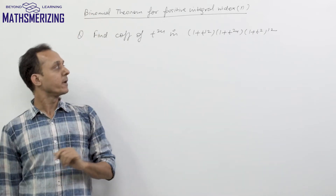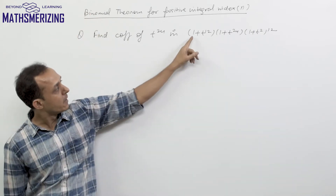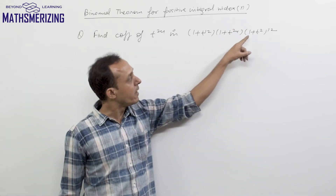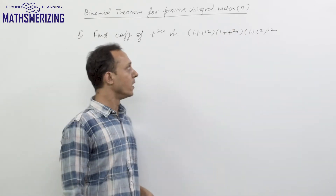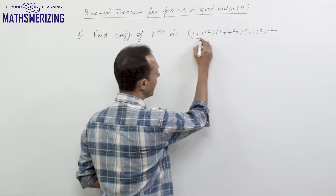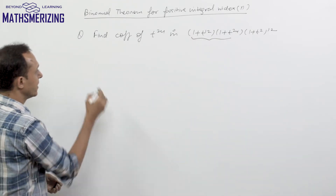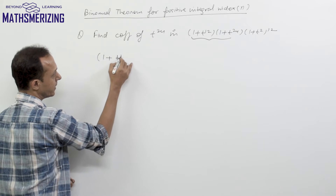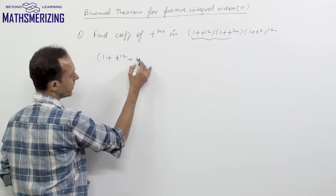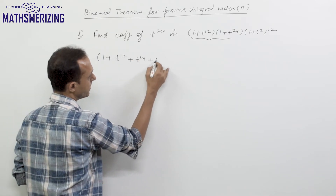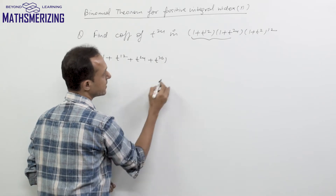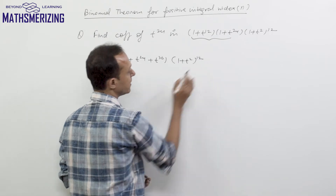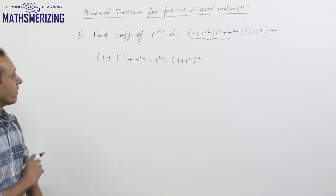Find the coefficient of t to the power 24 in the expansion of (1 + t¹²)(1 + t²⁴)(1 + t²)¹². First, I'll multiply the first two factors together to get 1 + t¹² + t²⁴ + t³⁶, and then we have the factor (1 + t²)¹².